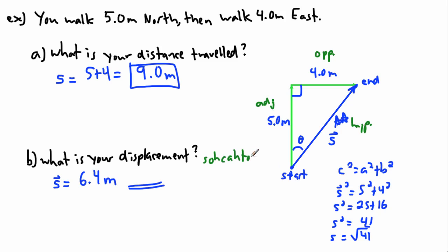That's so, ka, or toa. I'm going to use whichever one has an opposite and adjacent in it, so an o and an a. That's clearly this one. That means then that I know that tan of theta is equal to the opposite over adjacent. That means in this case, it's 4 over 5.